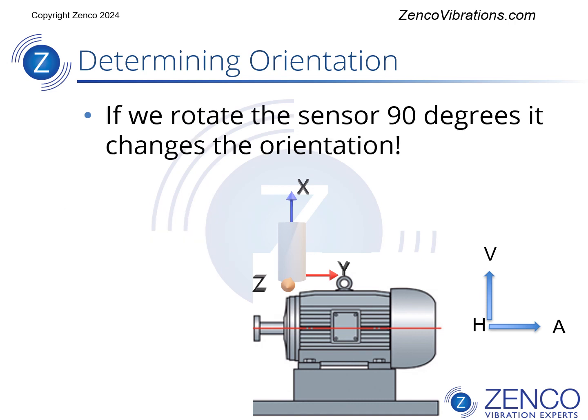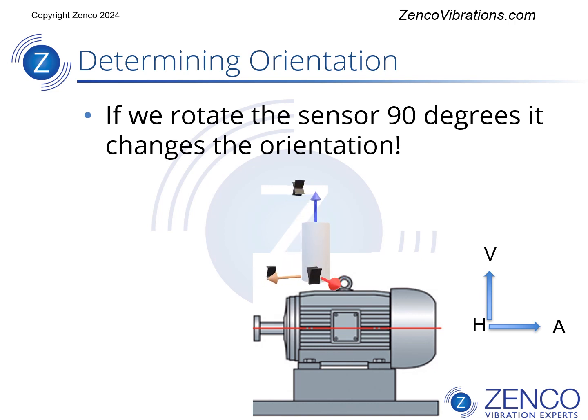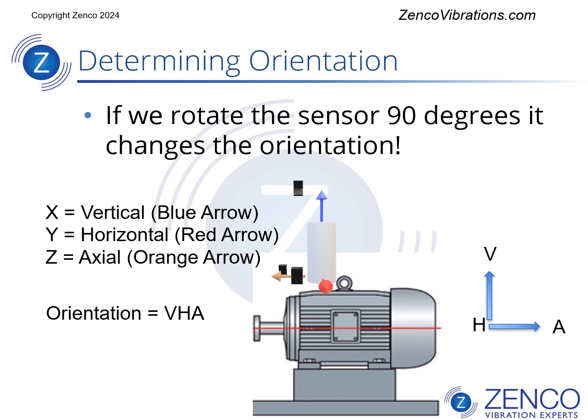If we rotate the sensor 90 degrees, it changes the orientation of the Y and Z axes. The X is still vertical, but now the Y is horizontal — the red arrow — and the Z is axial — the orange arrow. So we would call this orientation VHA.